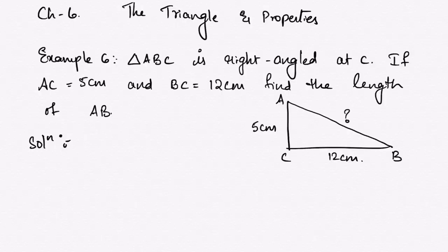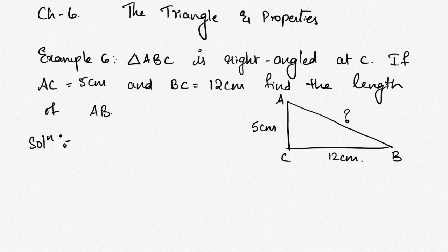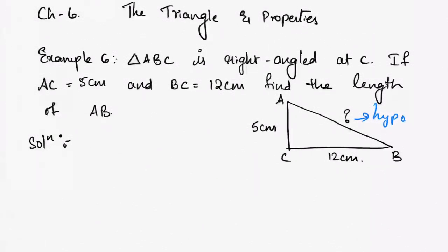The Pythagorean property: we have learned that the longest side of a right-angled triangle is called the hypotenuse, and the other two sides are called legs.